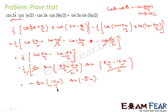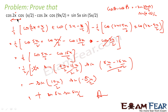This simplifies: the 1/2 and 2 cancel, giving −sin(10x/2)·sin(−5x/2). Since sin(−x) = −sin x, this becomes −sin(5x)·(−sin(5x/2)) = +sin(5x)·sin(5x/2). That is the answer. In general in such questions, keep converting from cos to sin or sin to cos until you get the answer.